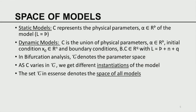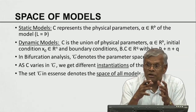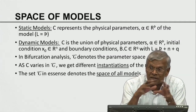In the static model there is no initial condition and no boundary condition — simply parameters. In the dynamic model, control is a union of parameters, initial condition, and boundary conditions, so L equals P plus N plus Q, where P is the number of parameters, N is the number of initial conditions, and Q is the number of boundary conditions. In non-linear differential equations there is a branch called bifurcation analysis, where the parameter space plays a key role. As C varies in script-C, we get different instantiations of the model. The parameter space is only a subset of the control space.